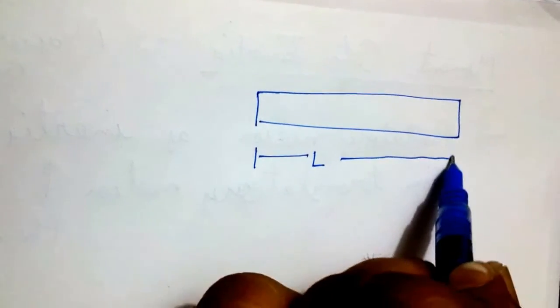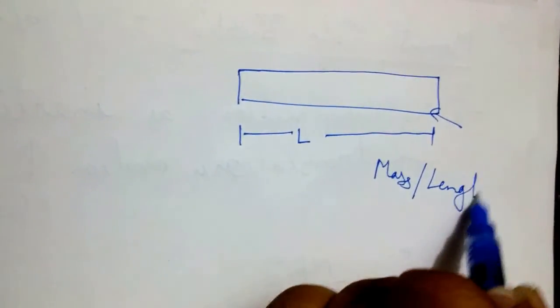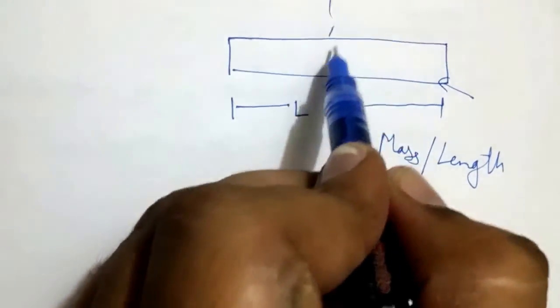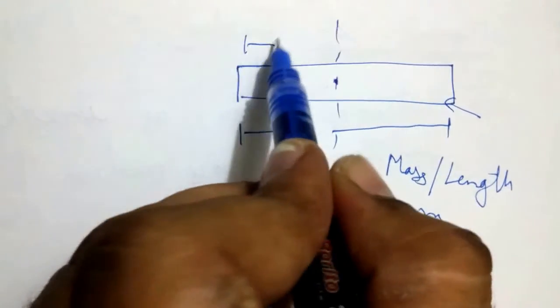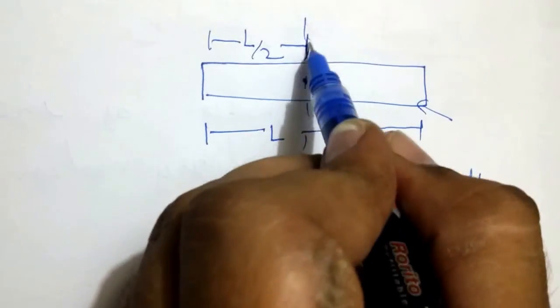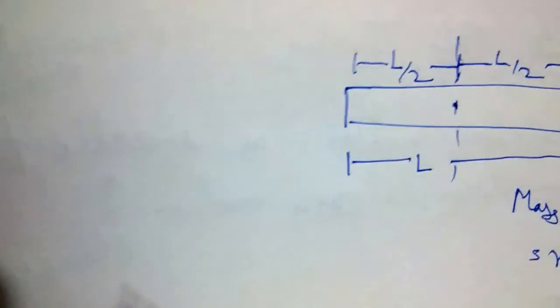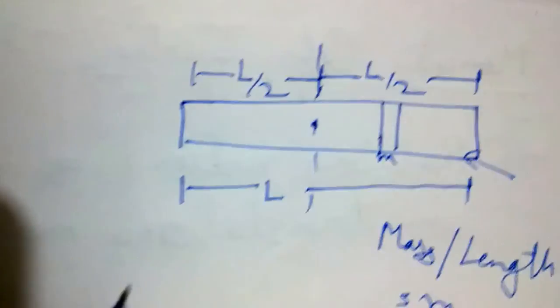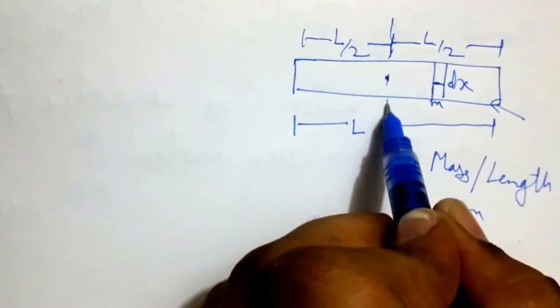First, consider a rod of length L with mass per unit length m (small m). We need to find its moment of inertia about an axis passing through its center of gravity, so the rod extends L/2 on each side. We define the moment of inertia of a small element of thickness dx at a distance x from the axis of rotation.